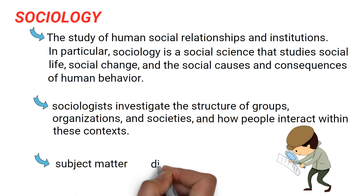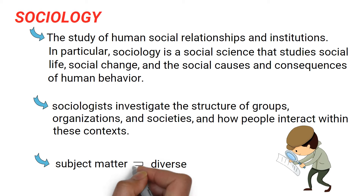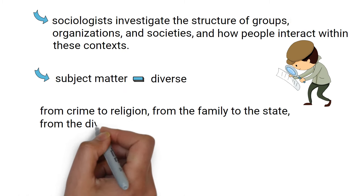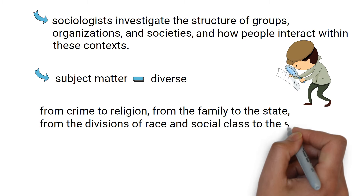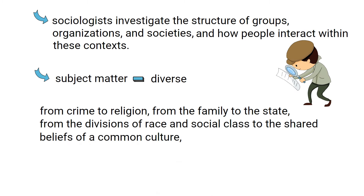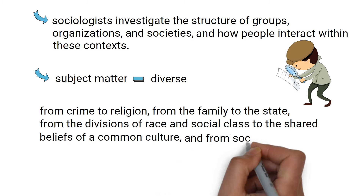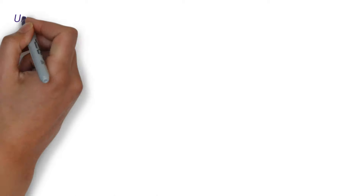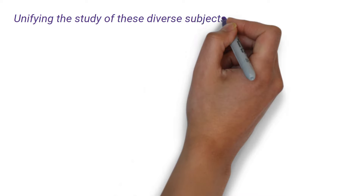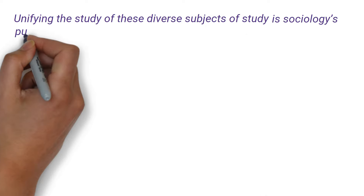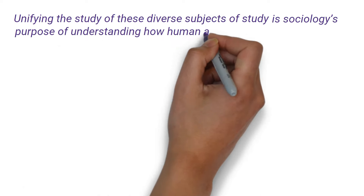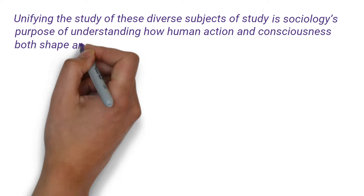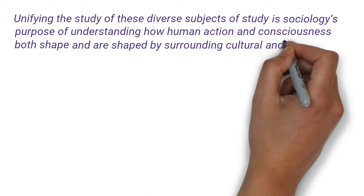Sociology's subject matter is diverse, ranging from crime to religion, from the family to the state, from the divisions of race and social class to the shared beliefs of a common culture, and from social stability to radical change in whole societies. Unifying the study of these diverse subjects is sociology's purpose of understanding how human action and consciousness both shape, and are shaped by, surrounding cultural and social structures.